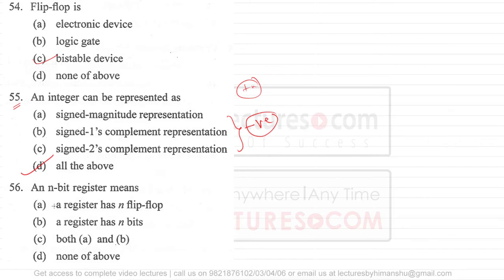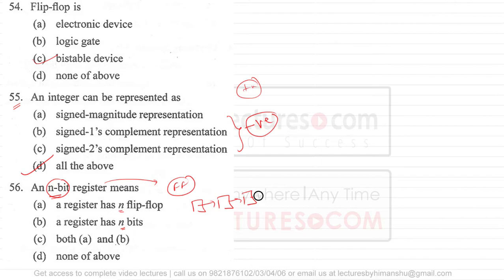Question 56: An n-bit register means it can have n flip-flops, and the register has n bits. Registers are made up of flip-flops, and each flip-flop stores one bit of information. So when we say an n-bit register, it has n flip-flops as well as n bits. Option C — both A and B — is the correct answer.